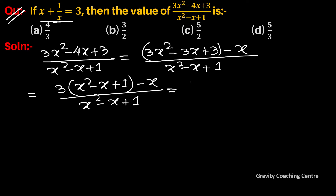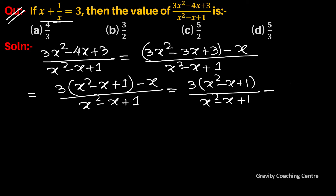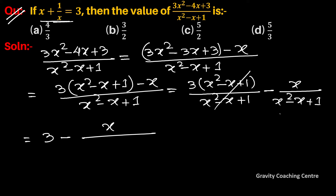Splitting the fraction: 3(x² - x + 1)/(x² - x + 1) minus x/(x² - x + 1), which simplifies to 3 minus x/(x² - x + 1).